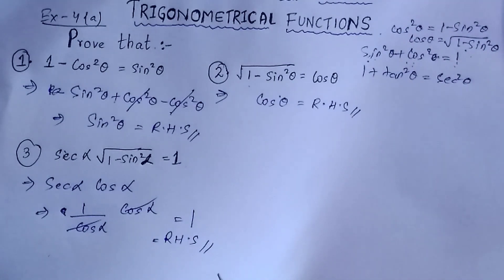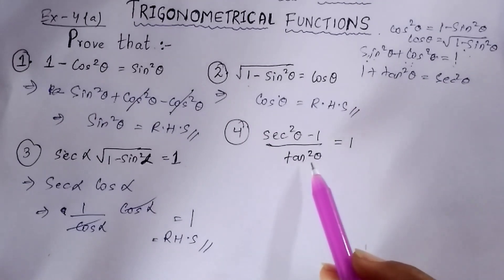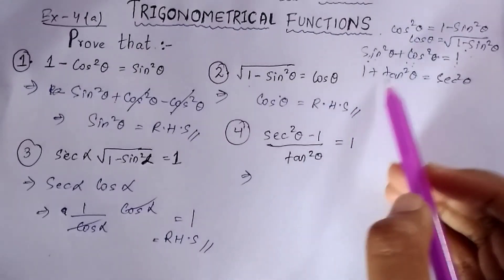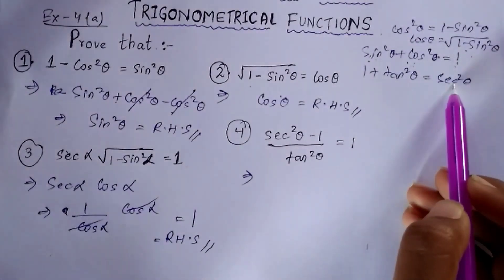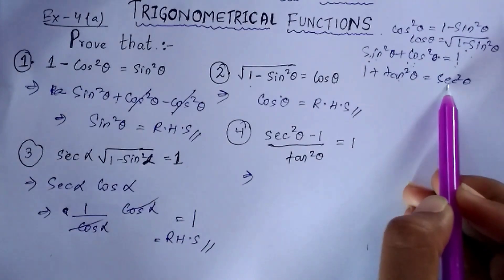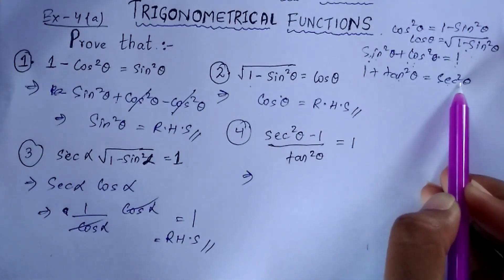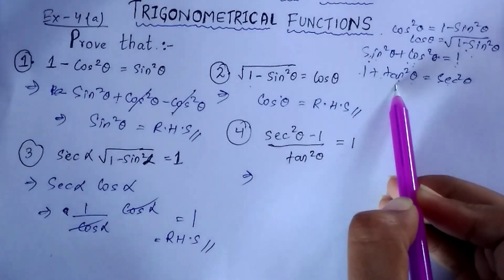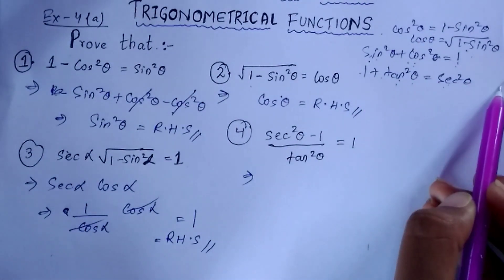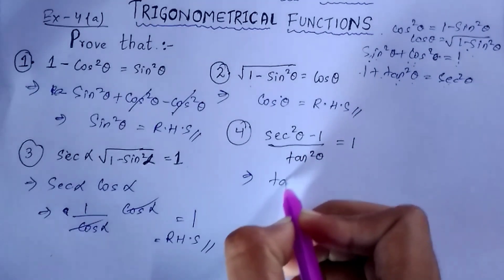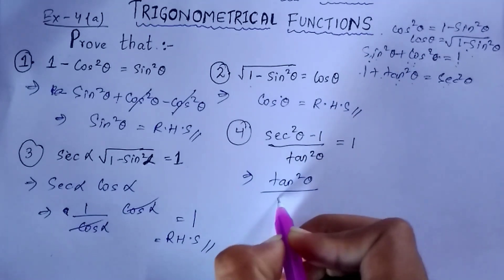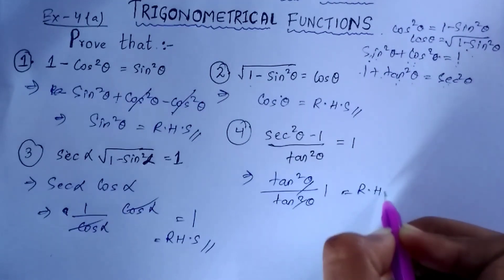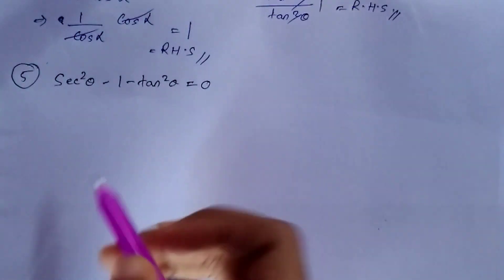Question number 4: prove that (sec²θ − 1)/tan²θ = 1. We know that 1 + tan²θ = sec²θ, so tan²θ can be written as sec²θ − 1. So instead of tan²θ in the denominator we can write sec²θ − 1. The numerator sec²θ − 1 and denominator sec²θ − 1 cancel, and we are left with 1, which equals your RHS. Hence proved.